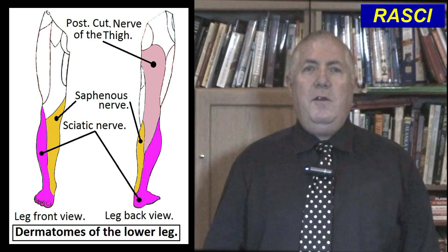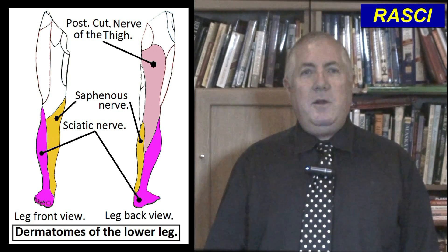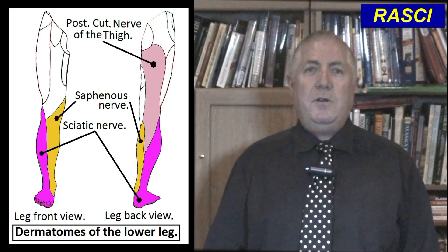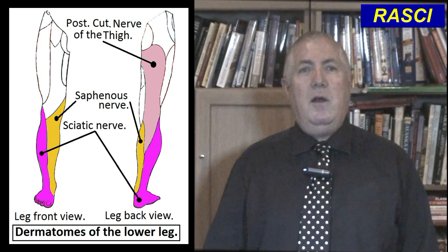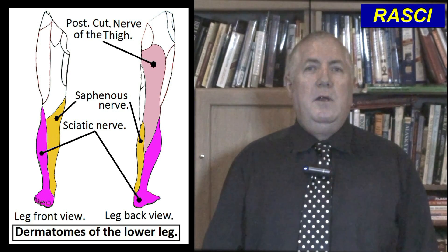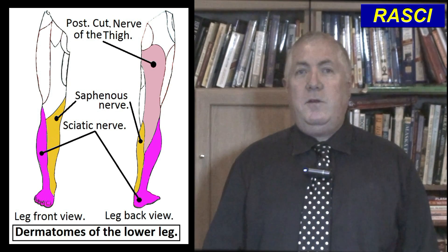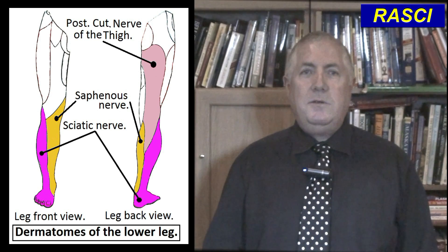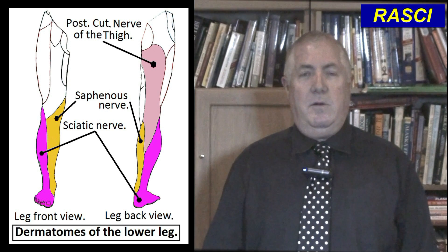The posterior cutaneous nerve of the thigh supplies sensation to skin on the posterior aspect of the upper leg as well as on the upper quarter of the calf. The saphenous nerve supplies sensation to the skin on the medial side of the lower leg as well as to the medial ankle joint capsule. The sciatic nerve, in turn, supplies sensation to all the other skin and it also supplies all of the lower leg deep tissues including muscle and bone.